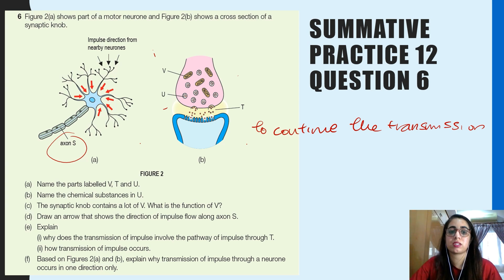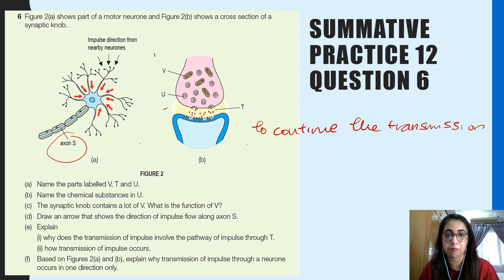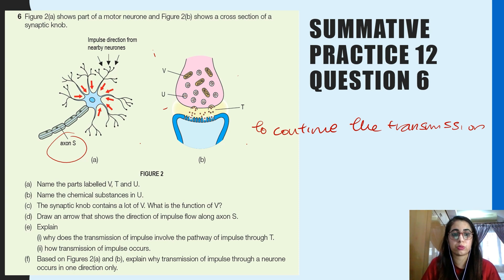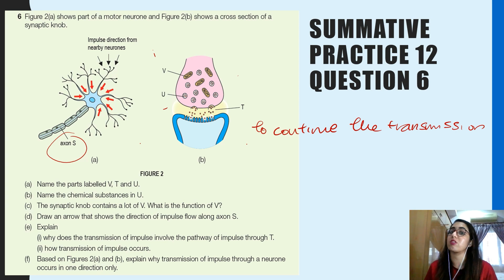Explaining why transmission of impulses through a neuron occurs in one direction only: impulse transmission occurs in one direction because after being secreted from synaptic vesicles, neurotransmitters move across the synapse and bind with the receptors of the next neuron. Therefore, impulse transmission takes place only in one direction.